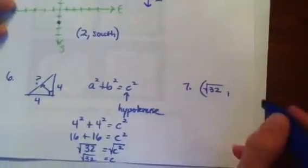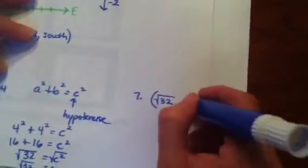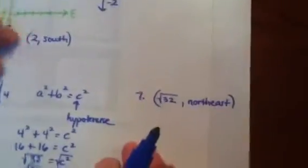So this length right here is the square root of 32. So on number seven, it says, what is that resultant vector? Well, it would be the square root of 32. That's the magnitude. And the direction is you are going northeast. It's the square root of 32, northeast.